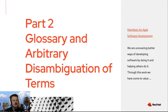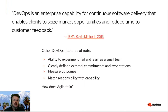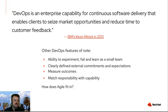Let's do a glossary and a somewhat arbitrary disambiguation of some terms. First, on DevOps — there are a lot of different definitions for DevOps, but here's the one I'm using: DevOps is an enterprise capability for continuous software delivery that enables clients to seize market opportunities and reduce time to customer feedback. That's from IBM's Kevin Minnick in 2013.